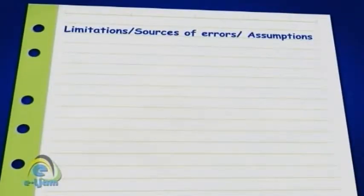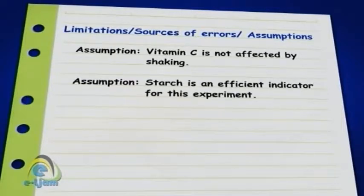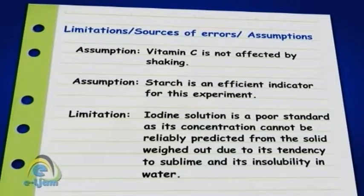Limitations, sources of error, or assumptions should be clearly identified, and are the factors that could affect the results. Assumption: Vitamin C is not affected by shaking. Assumption: Starch is an efficient indicator for this experiment. Limitation: Iodine solution is a poor standard, as its concentration cannot be reliably predicted from the solid weighed out, due to its tendency to sublime and its insolubility in water. Note that a limitation is a source of error which the experimenter may have no control over due to the method chosen, and which ultimately affects the reliability of the results obtained.